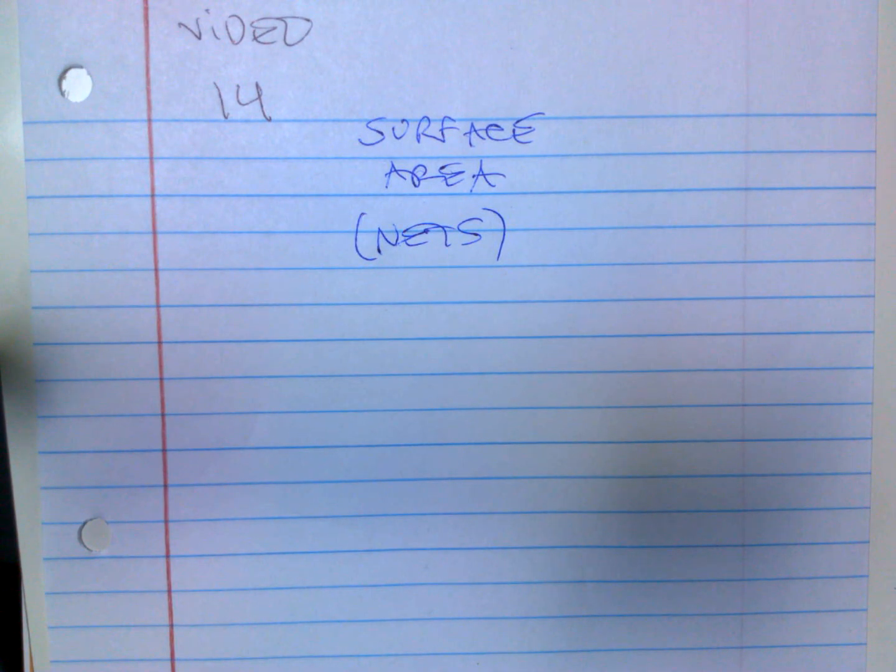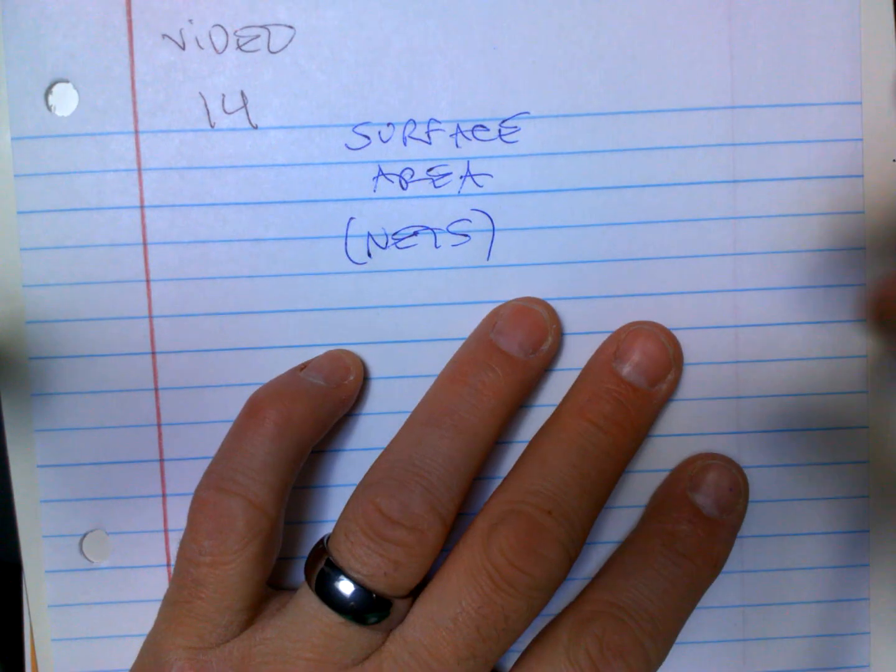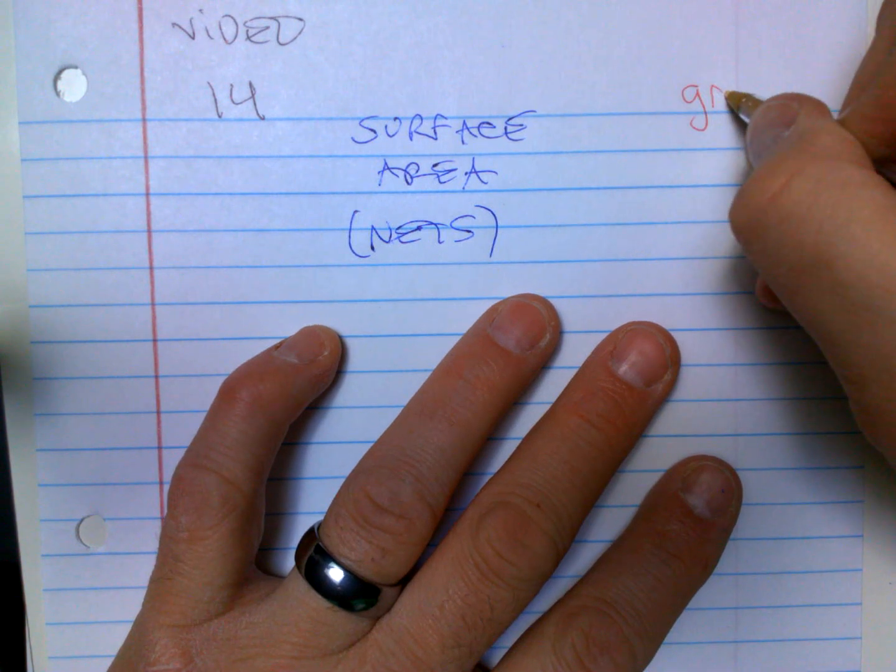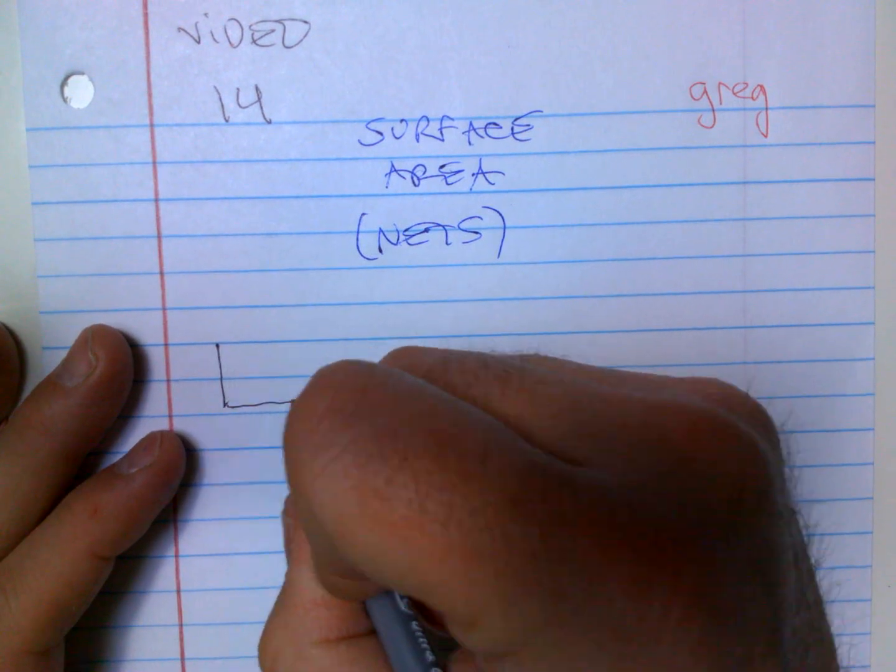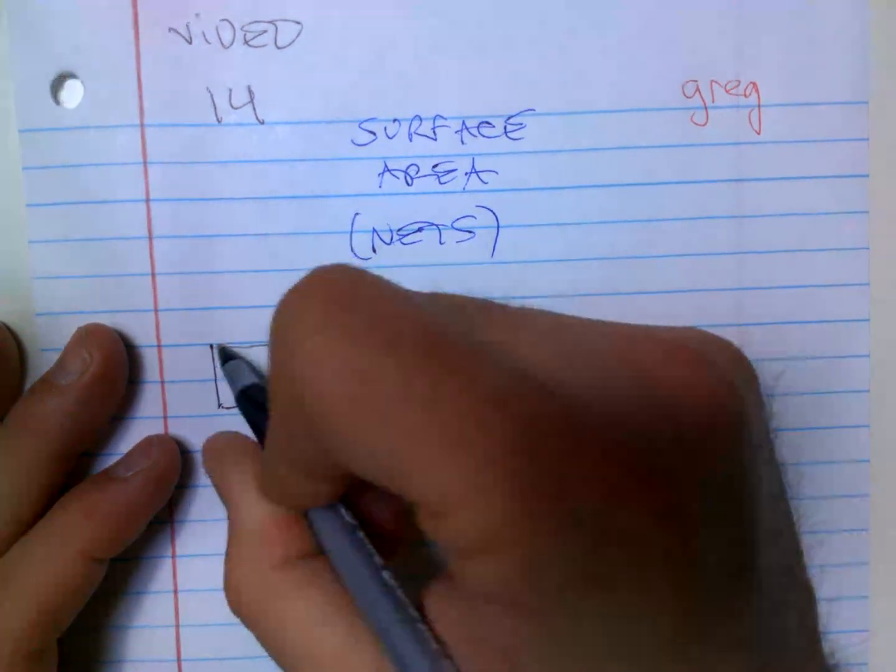Surface area, or you might think of nets. Nets is when we cut up a 3D object and flatten it out so we can find the area of all the sides. So what I did in class - hope you wrote your name so I can give you the extra credit - I took a Kleenex box.